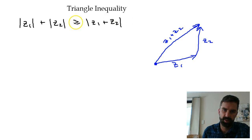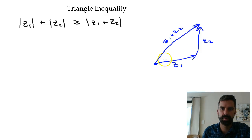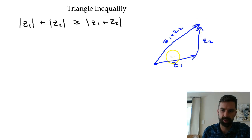Note that it's greater than or equal to — the case where it's equal is when z1 and z2 actually lie on the same line, so their arguments would be the same, and so you're just traveling in a straight line regardless.